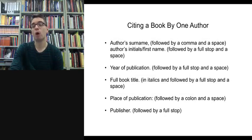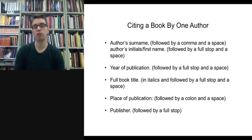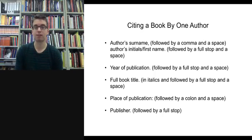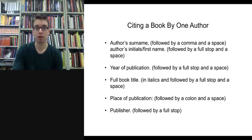Let's start with citing a book by one author, which is probably the most common reference students include. The ingredients are: the author's surname followed by a comma, the author's initial or first name, a full stop, then the year of publication, the full book title in italics followed by a full stop, then the place of publication followed by a colon and a space, and finally the publisher and a full stop. Those are the ingredients you need.